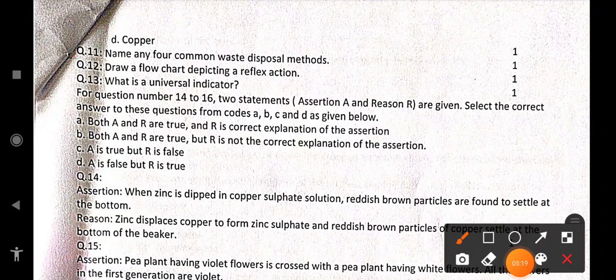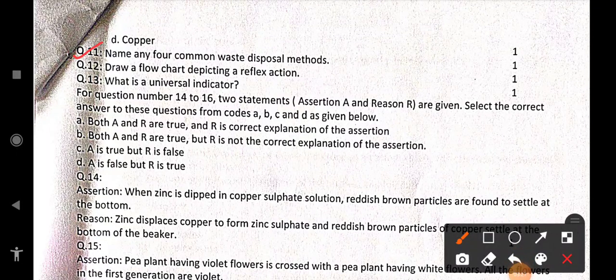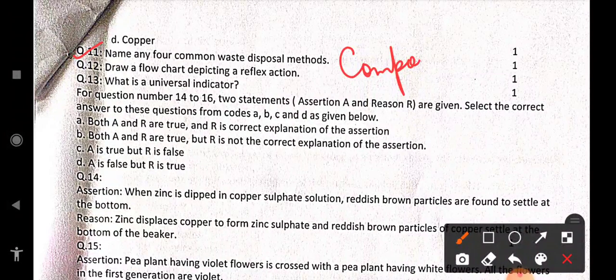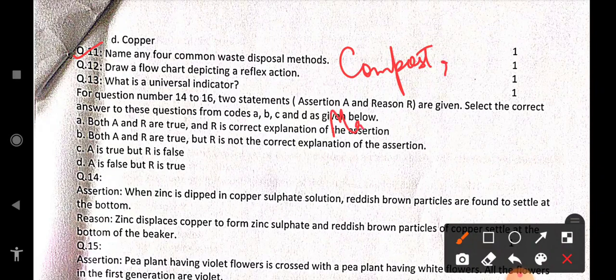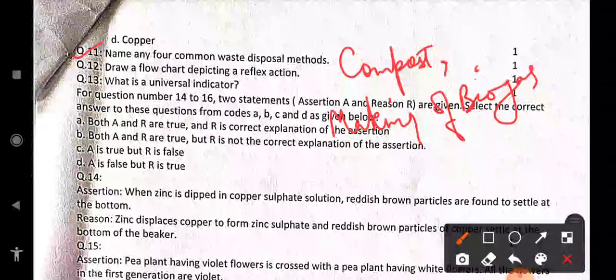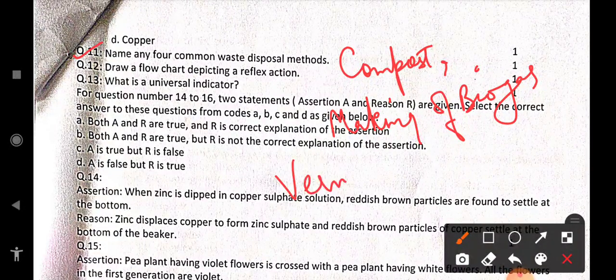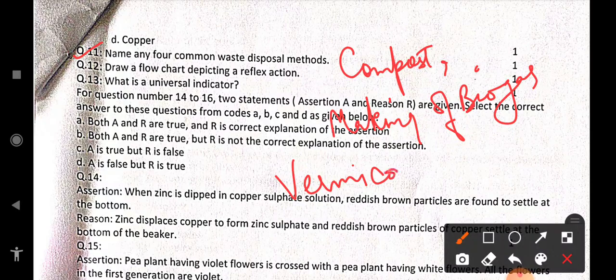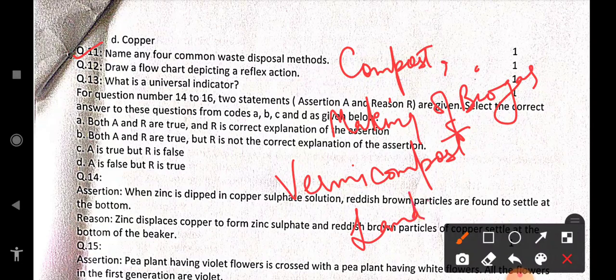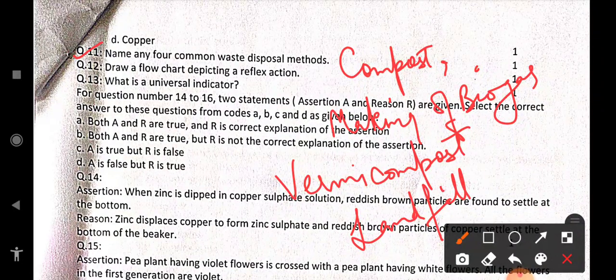Then name any four common waste disposal methods. So one is compost. First, second is making of biogas. Third is vermicompost. And fourth is landfill.